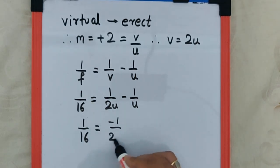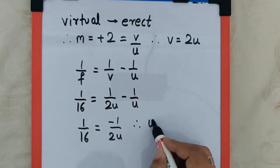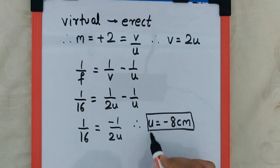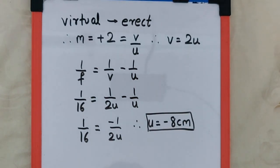And therefore u is going to be minus 8 centimeter, which means the object is on the left hand side of the lens at 8 centimeter, and that is your final answer.